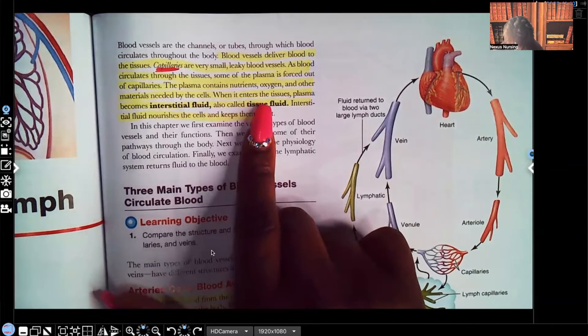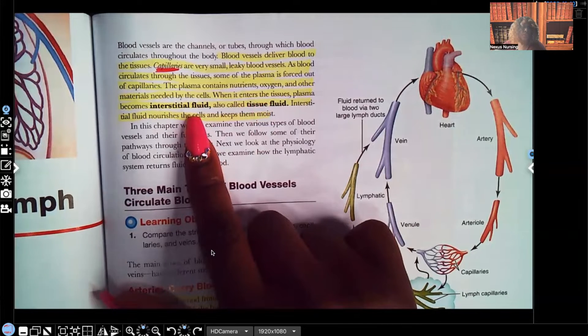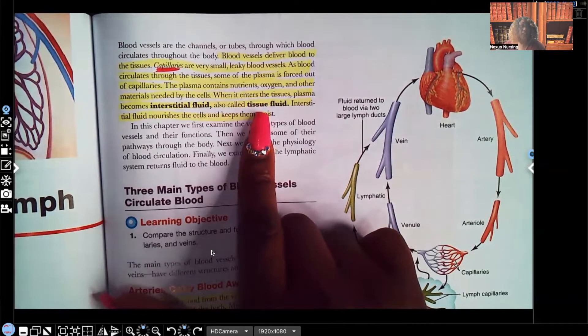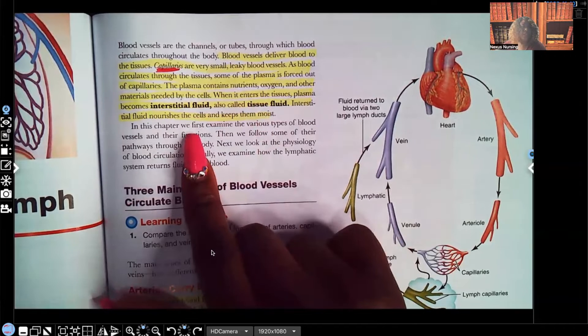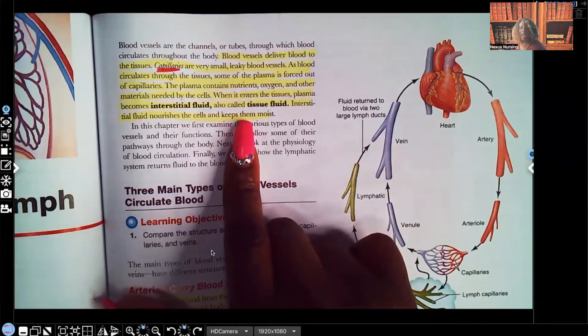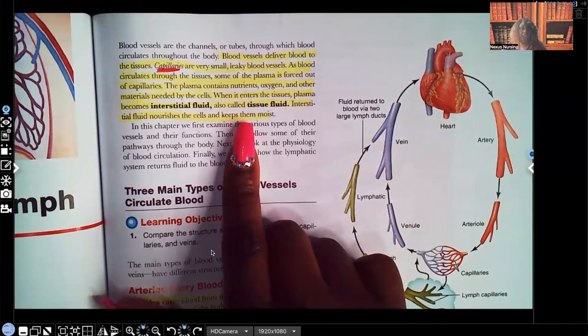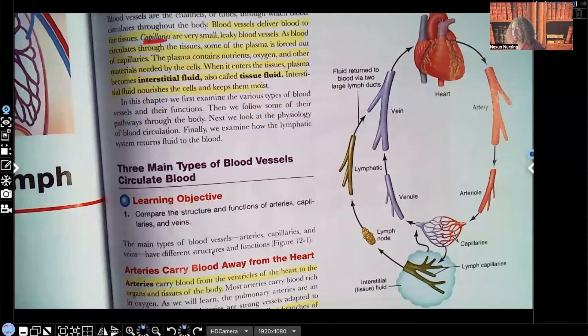Look at what it says. When it enters the tissues, plasma becomes interstitial fluid, that's also known as tissue fluid. Interstitial fluid nourishes the cells and keeps them moist. This fluid, guys, that's in that plasma, it has all the things that the tissues actually need to survive.